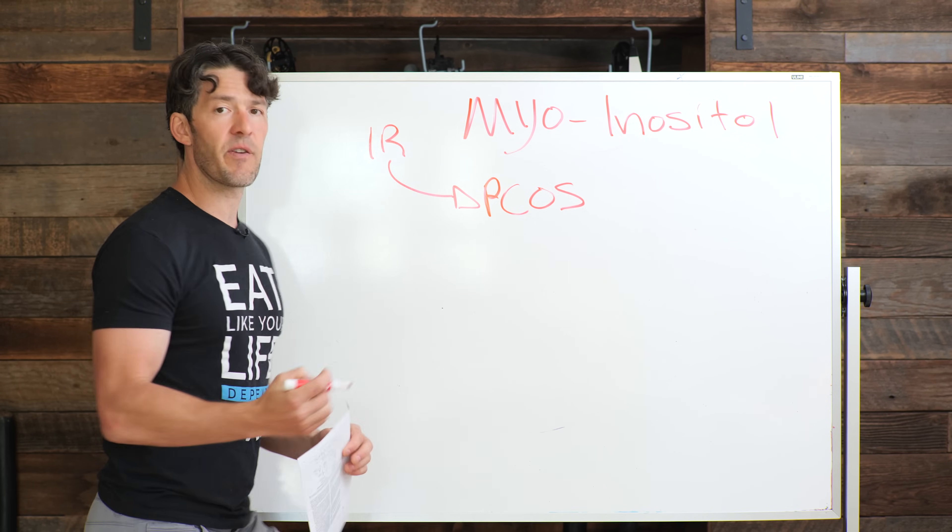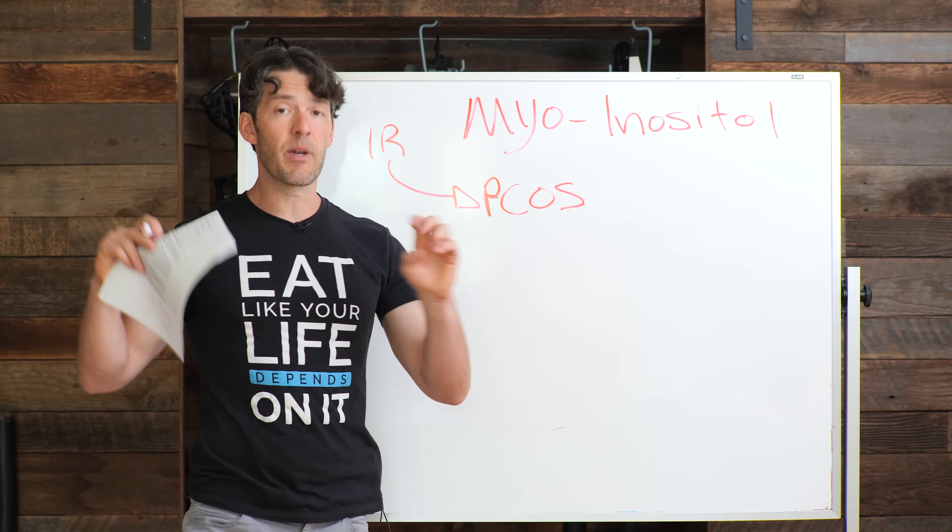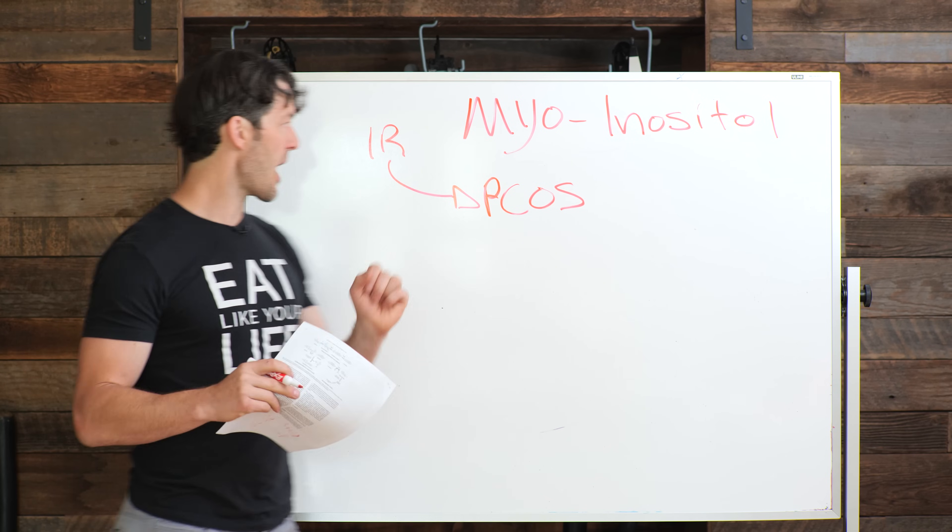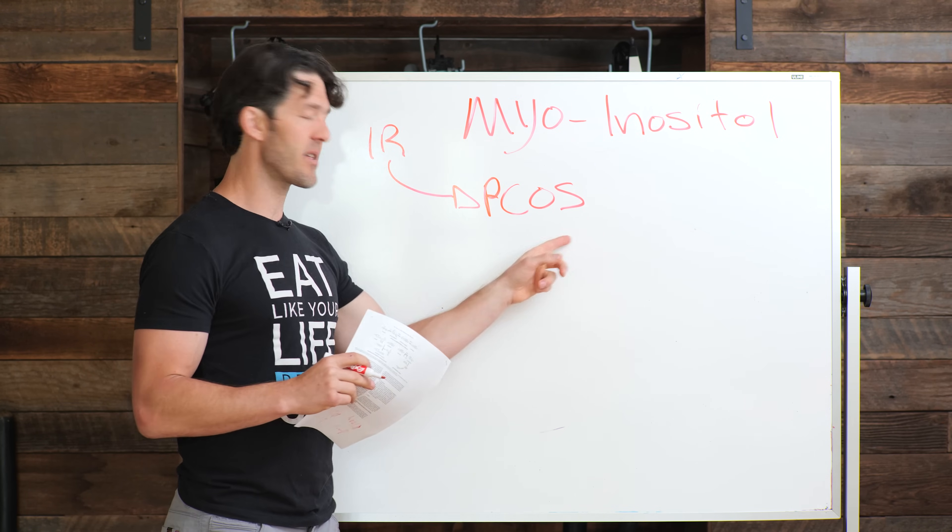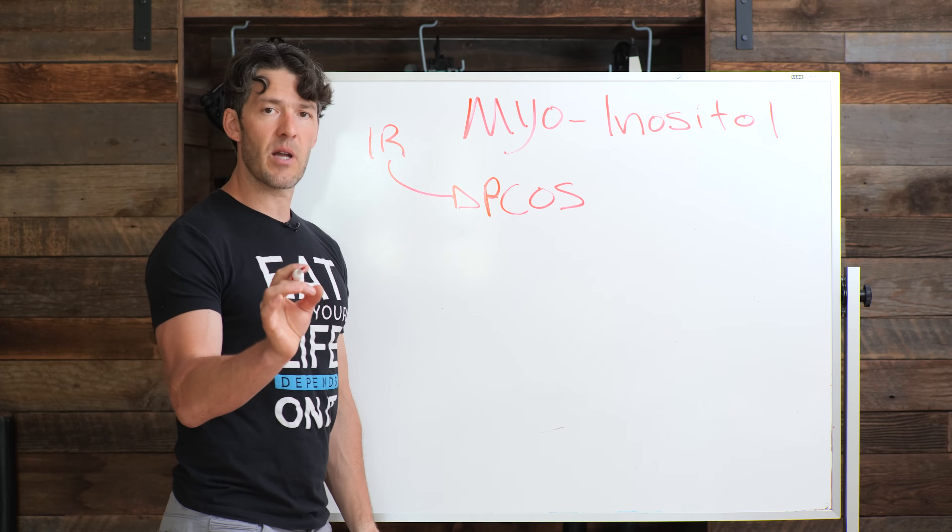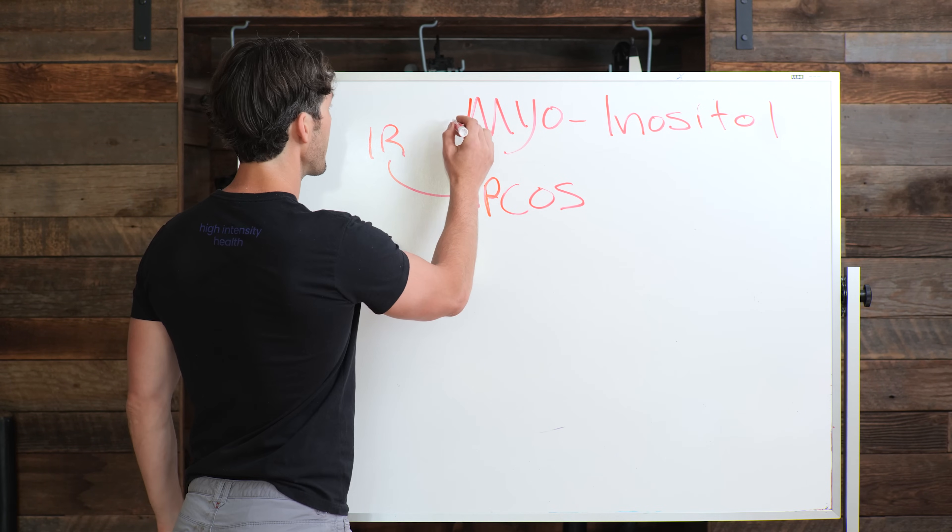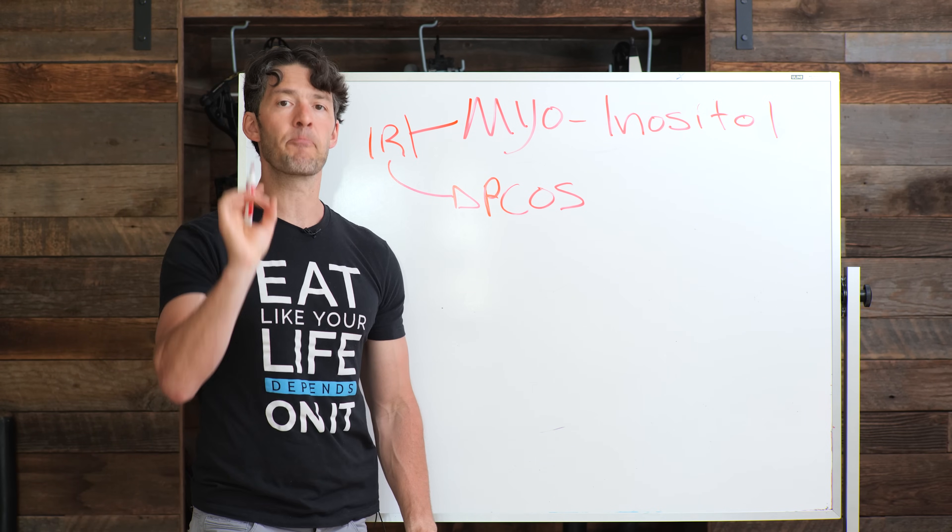So a lot of people think, I have polycystic ovaries, so I must have a reproductive issue. Yes, that would be correct. However, the reason why this is manifesting is underlying insulin resistance. And so this is where myoinositol comes in, because it helps to block insulin resistance and helps to improve insulin sensitivity.